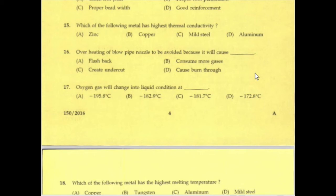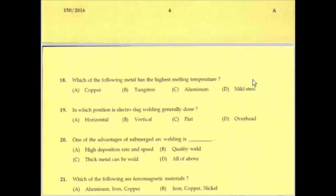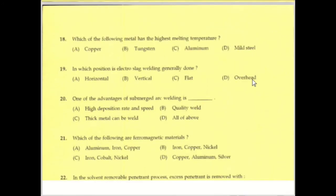Oxygen gas changes into liquid condition at what temperature? That is the melting point of oxygen. The melting point of oxygen is minus 182.9 degrees Celsius.